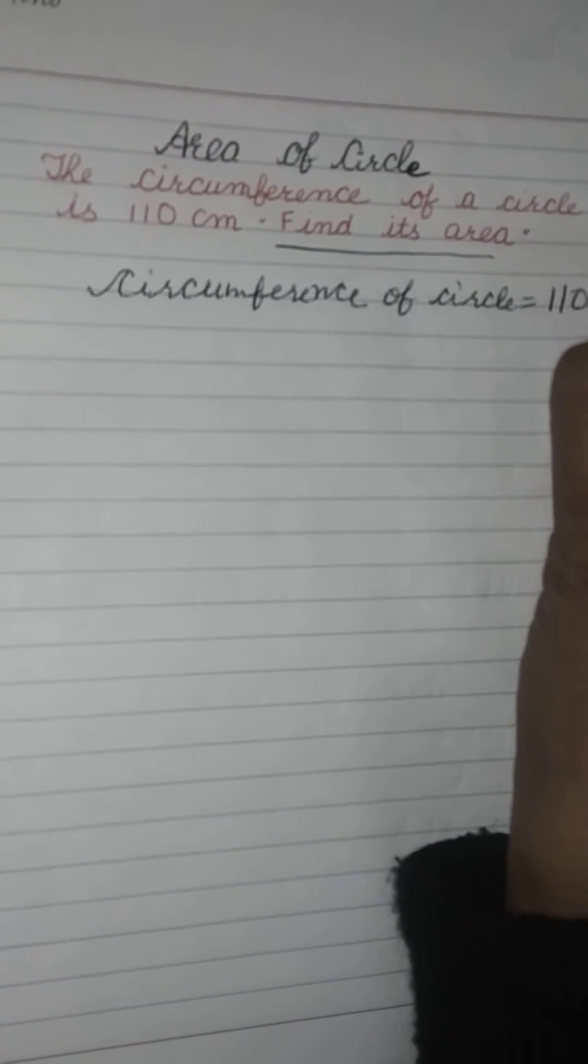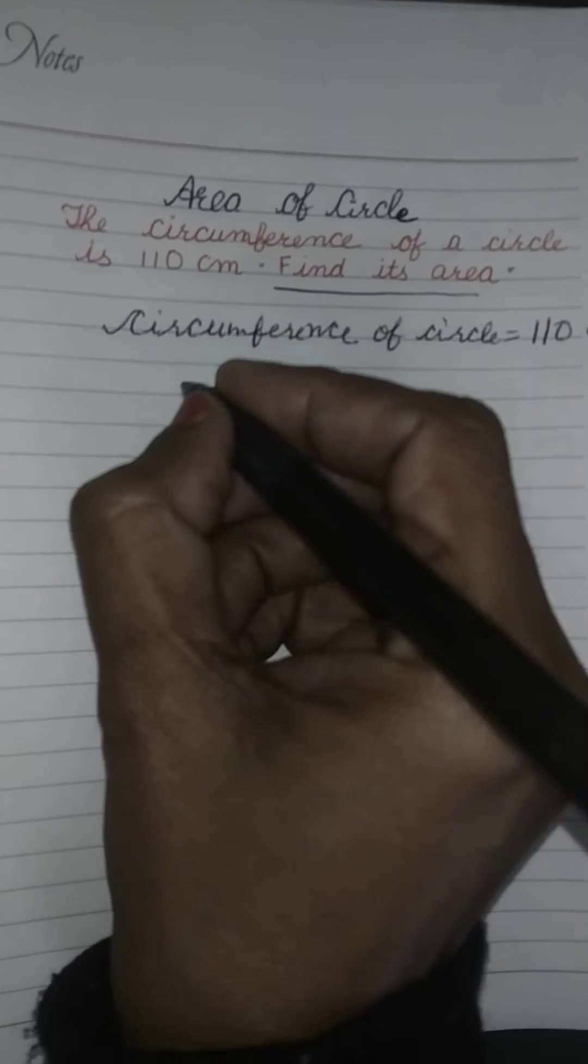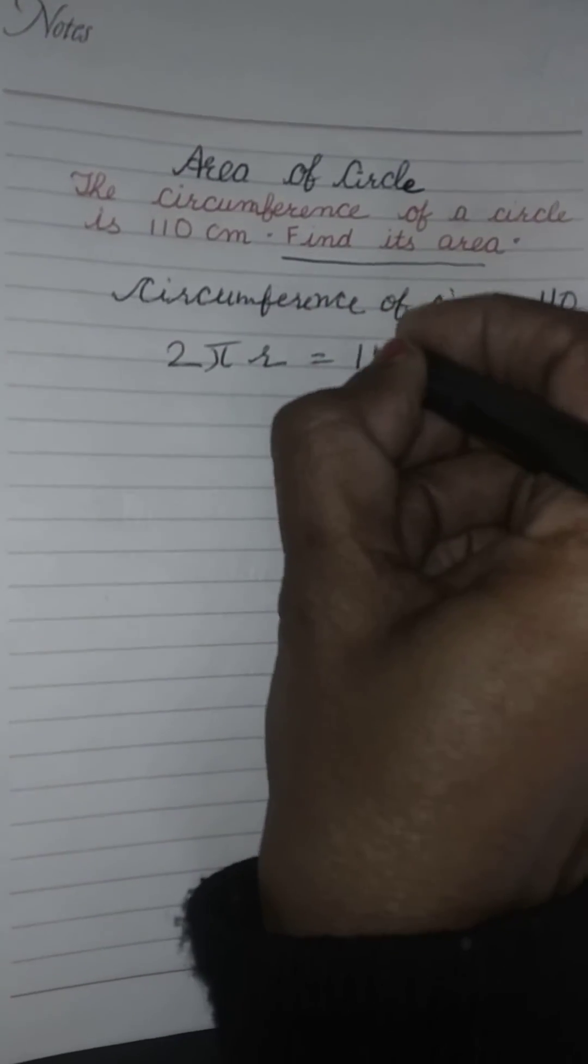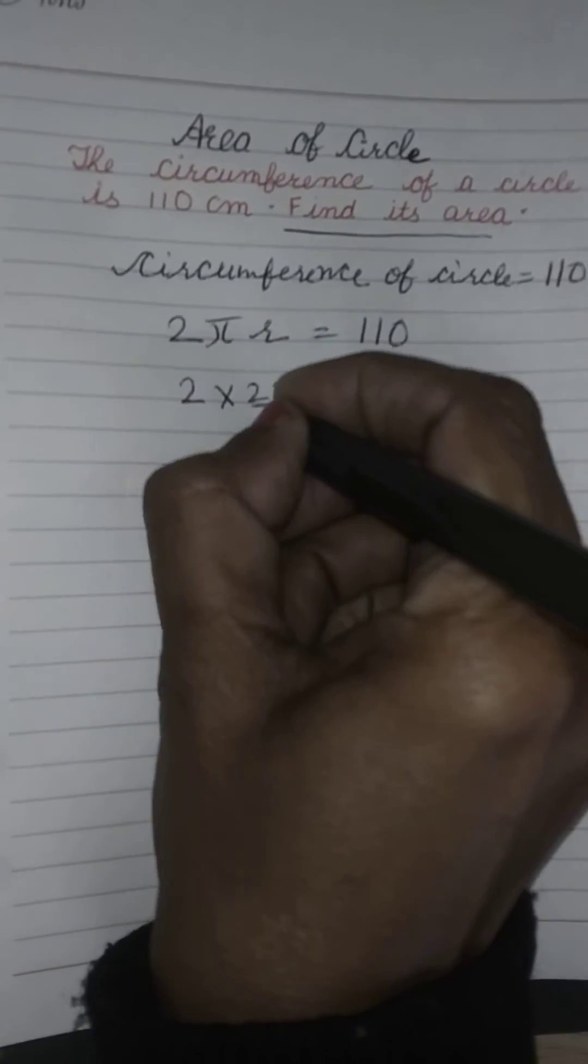The circumference is 110 cm. The formula for circumference is 2πr equals 110. So 2 multiplied by 22/7...